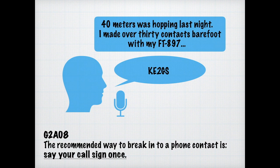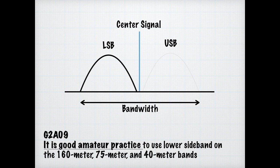As a technician, you're hopefully accustomed to this. A common way to break into a phone contact is just saying your call sign once. So imagine a conversation on 40 meters — you just simply say something like KE2GS. We always want to make a habit of doing the right thing and operating in the right mode. It's good practice, and know for the exam, to use lower sideband on 160, 75-meter, and 40-meter bands.